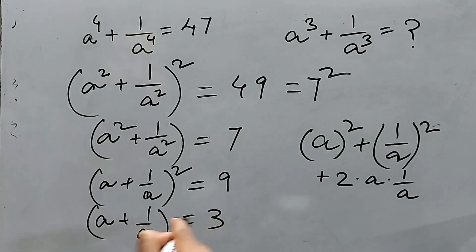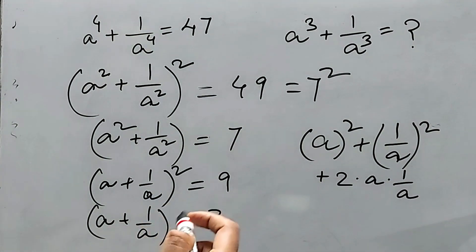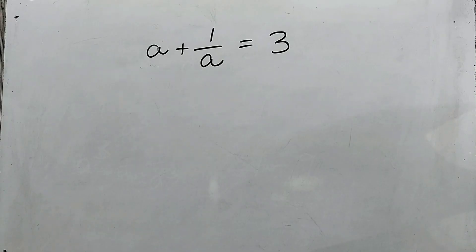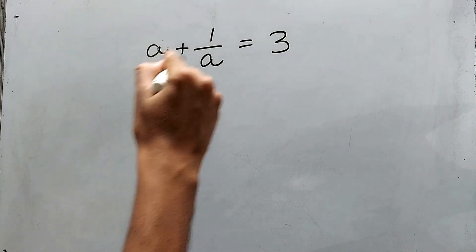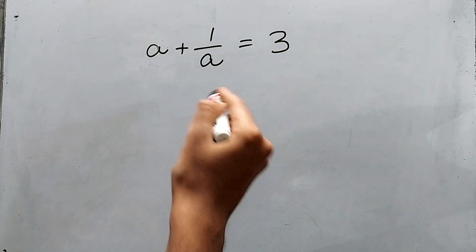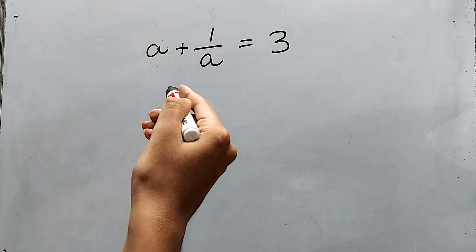Now what is the required value? The required value is a^3 + 1/a^3. Let's do this separately. a + 1/a = 3. Now to get the cube, definitely we have to cube both sides.